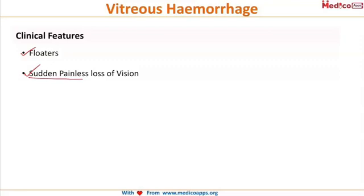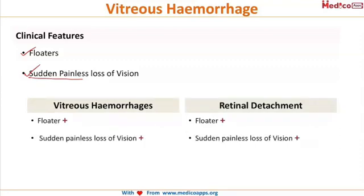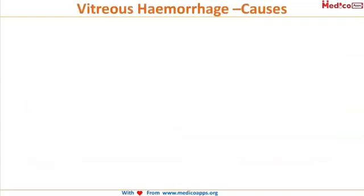When you think of sudden painless loss of vision, the first thing you remember is retinal detachment. How will you differentiate between these two conditions? Floaters are present in both, and both present with sudden painless loss of vision. However, the differentiating feature is flashes of light — photopsia is present in retinal detachment but absent in vitreous haemorrhage. This emphasizes the importance of taking a history of flashes.